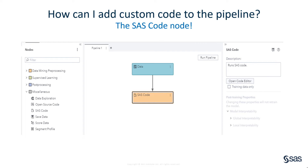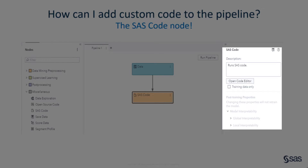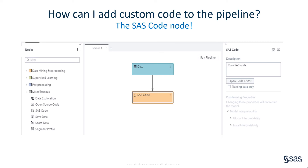As you can see from the screenshot, the SAS Code node is available in the miscellaneous grouping of nodes on the left. This means it can be dragged and dropped anywhere within a pipeline. Just like any of the other Model Studio nodes, the SAS Code node has properties associated with it. Let me quickly point out a few details of the coding environment itself. This is the editor you will be taken into when you click Open from the property sheet of the code node.